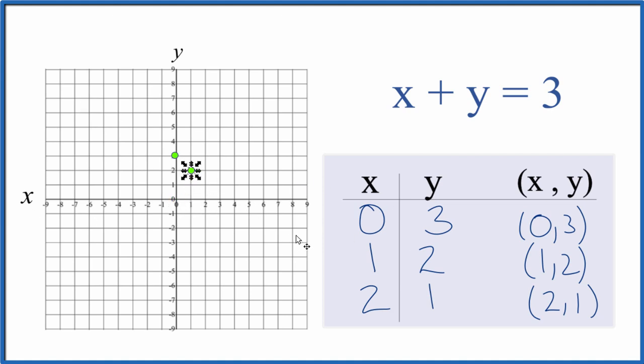We could just use 2 points and draw our line, but if you have 3, if you made an error up here, you'll catch that. So let's do our last one here. x is 2, y is 1. You can see our line there. Let's put a line through that and then arrows to show it goes to infinity.